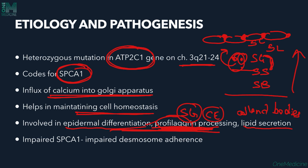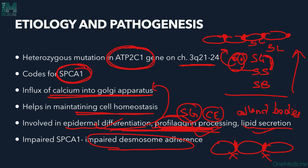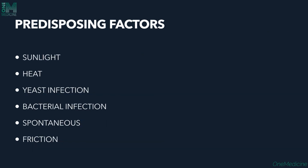Calcium homeostasis is very important for all these processes — epidermal differentiation, profilaggrin processing, and lipid secretion — and in Hailey-Hailey disease this homeostasis is altered. Impaired SPCA1 also leads to impaired desmosome adherence. Keratinocytes are attached to each other by desmosomes, which maintain the shape, integrity, and structure of the epidermis. Impaired SPCA1 causes destruction of these desmosomes, so keratinocyte adherence is lost — this is why blisters and vesicles are seen.